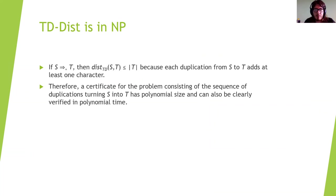The first step is to show that the tandem duplication distance problem is in NP. Since the number of duplications to transform s into t is at most equal to the length of t, we can use a certificate given by the sequence of duplications, and we know this is polynomial in the size of the instance and easily verifiable in polynomial time. So the problem is in NP.